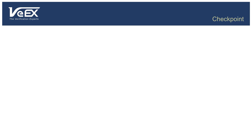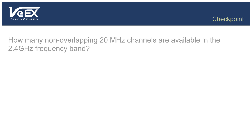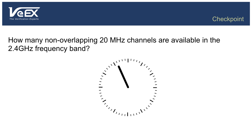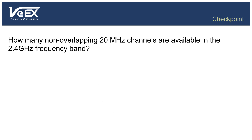To make sure you understood some of the key concepts in this section, here's a little quiz. How many non-overlapping 20 MHz channels are available in the 2.4 GHz frequency band? 14 frequency channels are defined in the 2.4 GHz frequency band, and they're only 5 MHz apart, but Wi-Fi requires roughly 20 MHz in width to communicate, so only channels 1, 6, and 11 will not overlap in the United States.